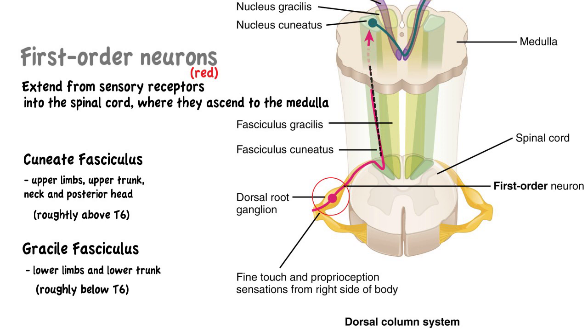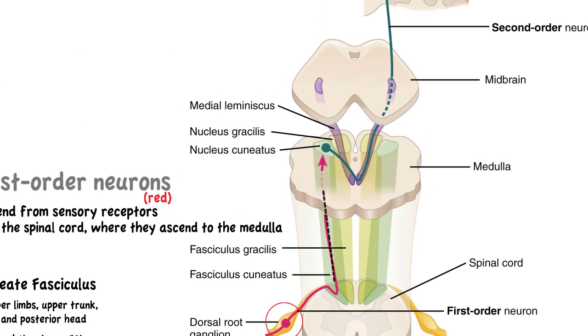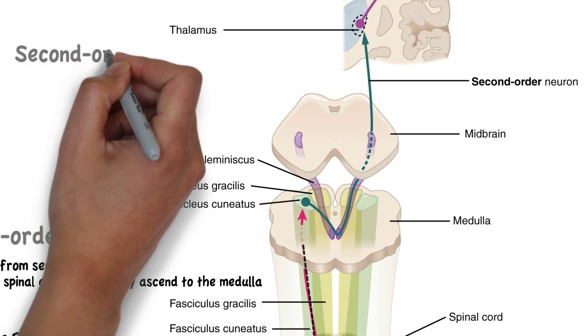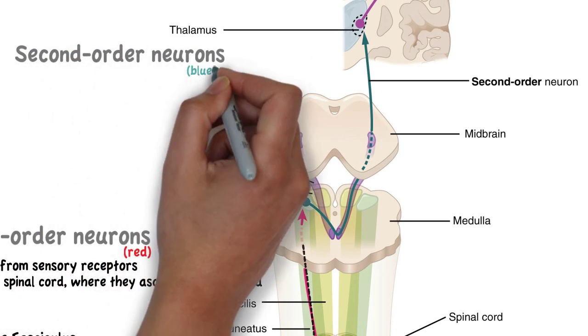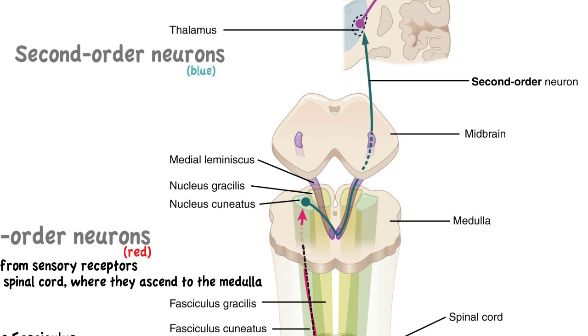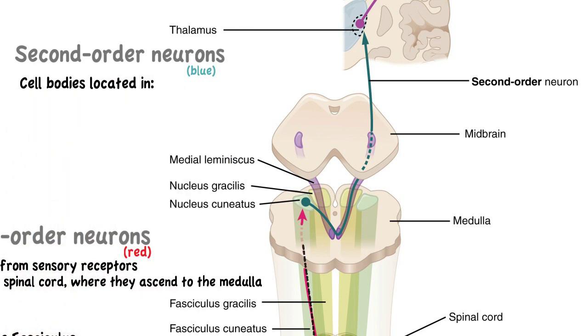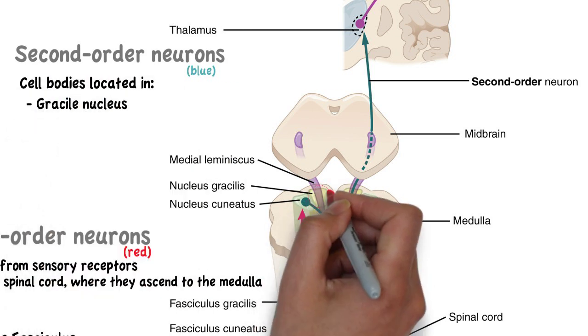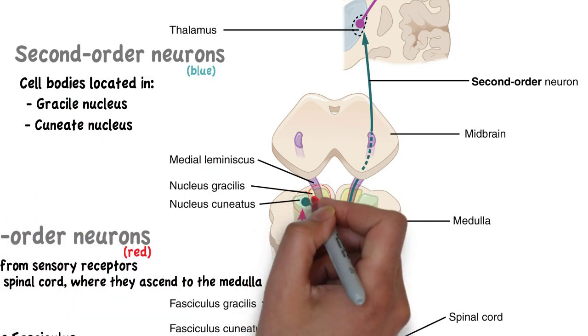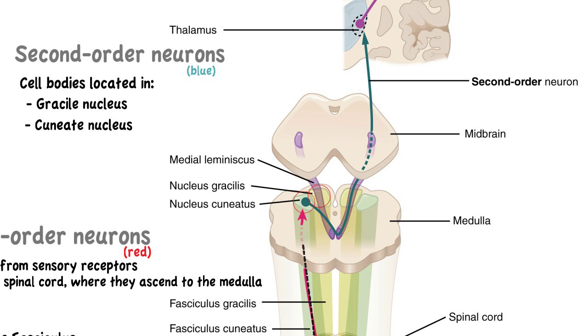The axons of the first order neurons synapse with the dendrites of the second order neurons, whose cell bodies are located in the gracile nucleus or cuneate nucleus of the medulla.